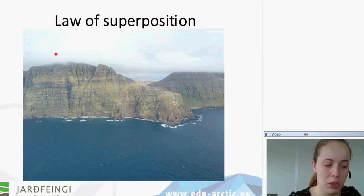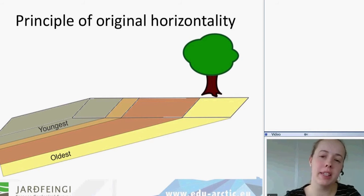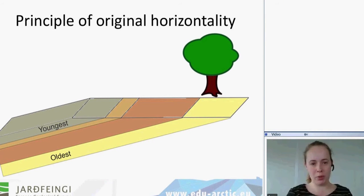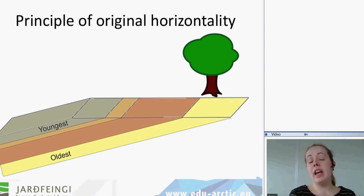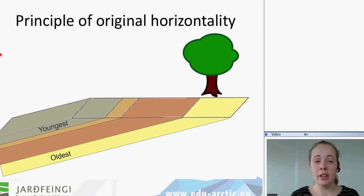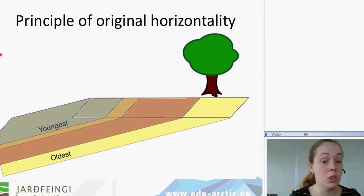Now we move on to the second principle that Nicolas Steno came up with. It is called the principle of original horizontality. We can say that at first the layers were horizontal, and now they are tipped for some reason, but still we have the oldest layer at the base and the youngest layer at the top, and we also have hiatus in between the layers.